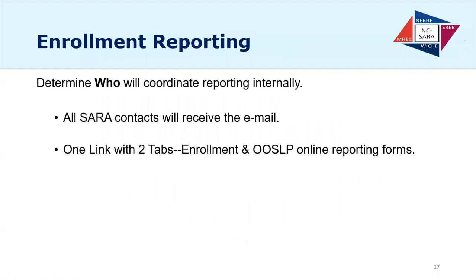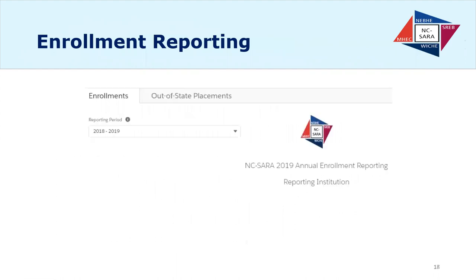Basically, enrollment reporting is just as it has been for the past years. Use your best judgment. If you don't report to IPEDS, read up on what IPEDS reporting is and try to model that. Most importantly, be consistent within your own institution from year to year so that your data is consistent over time. Everyone on the NC-SARA contact list will receive an email, and when you click the link it will open two tabs — one for enrollment and one for out-of-state placement.